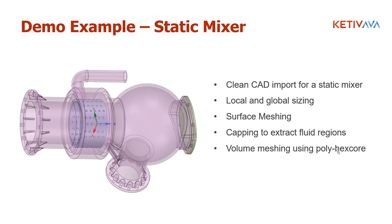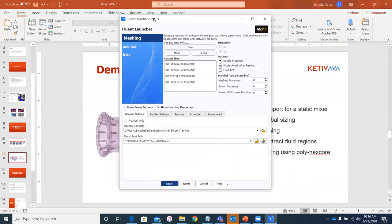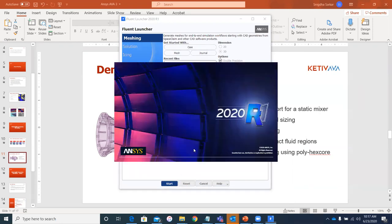Let me go ahead and start the Fluent launcher. I'm using 2020 R1, the latest Fluent version, and starting the launcher in meshing mode. If you already have a mesh, you could go directly to solution mode, but for this example we're starting in meshing mode. Notice it gives you an option to select the number of cores for parallel meshing — I've used eight cores.